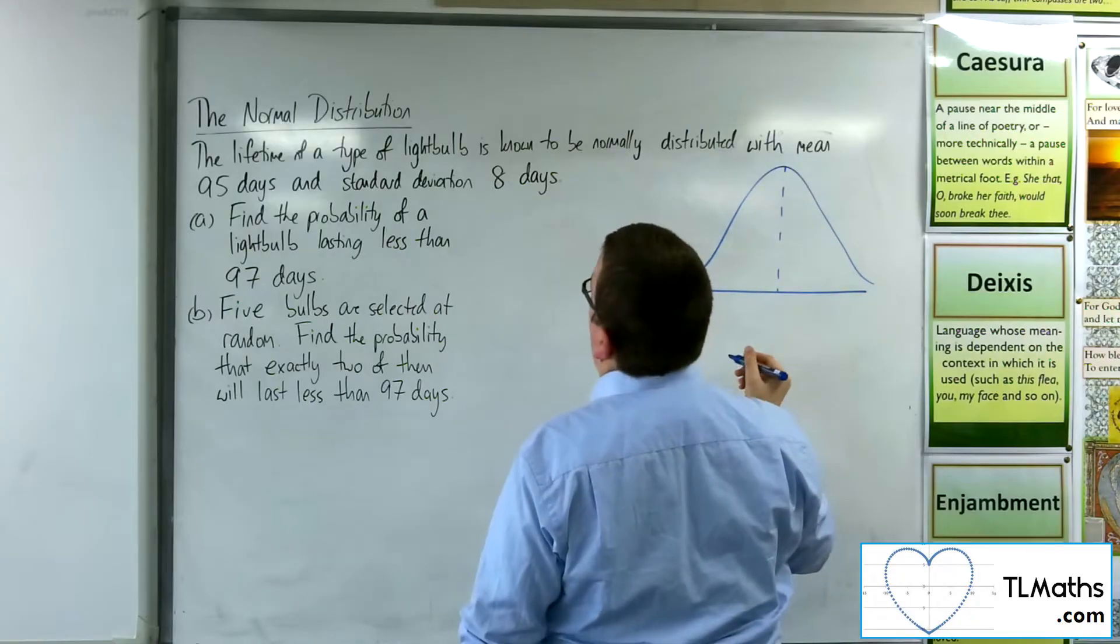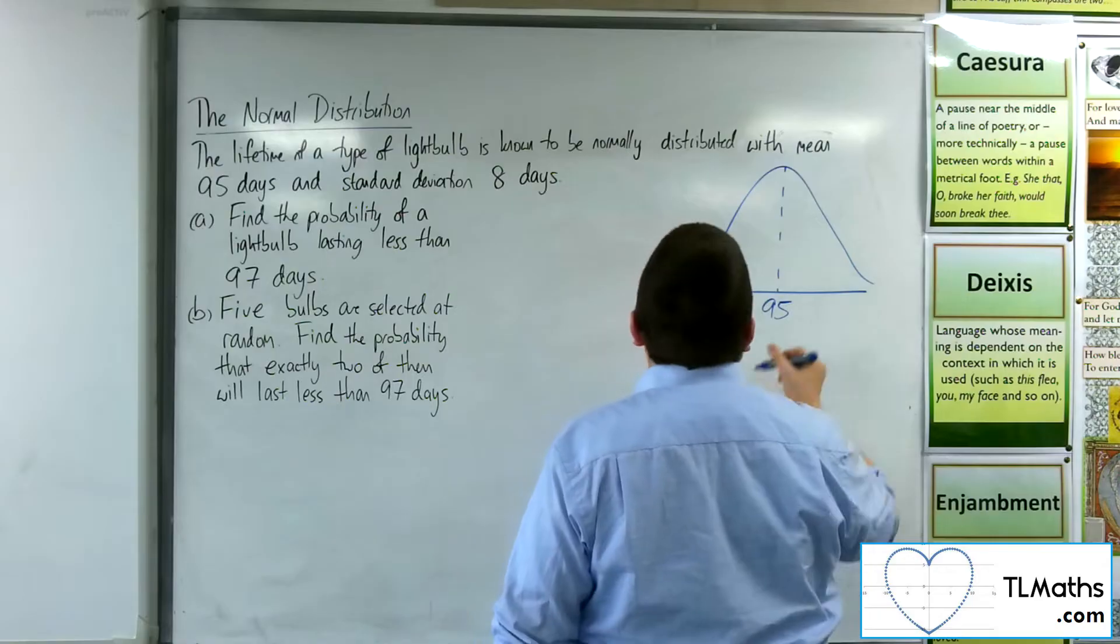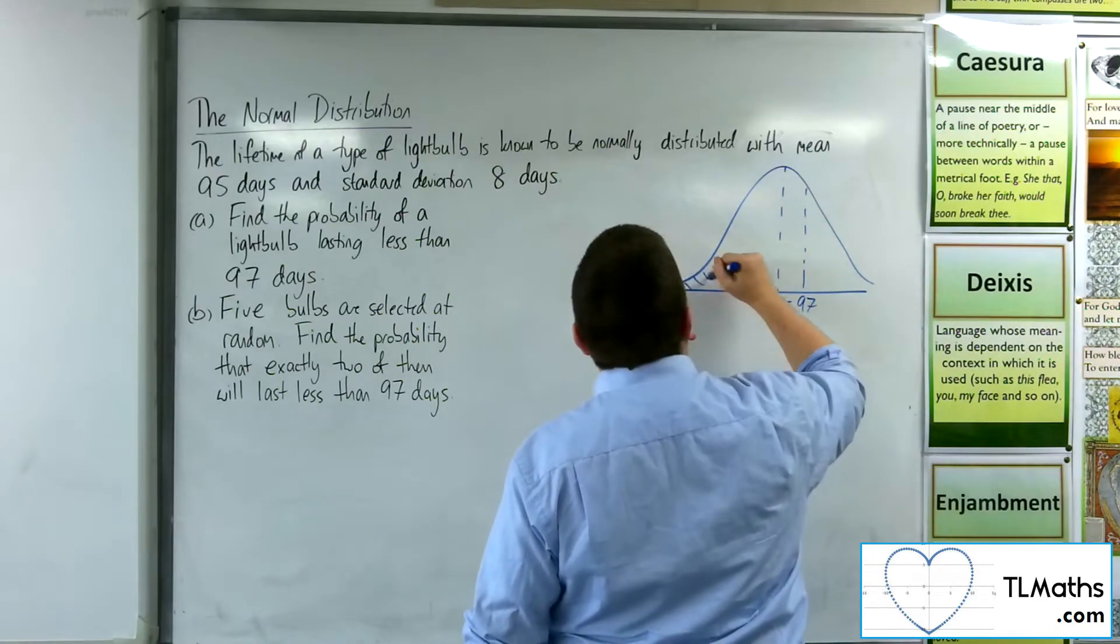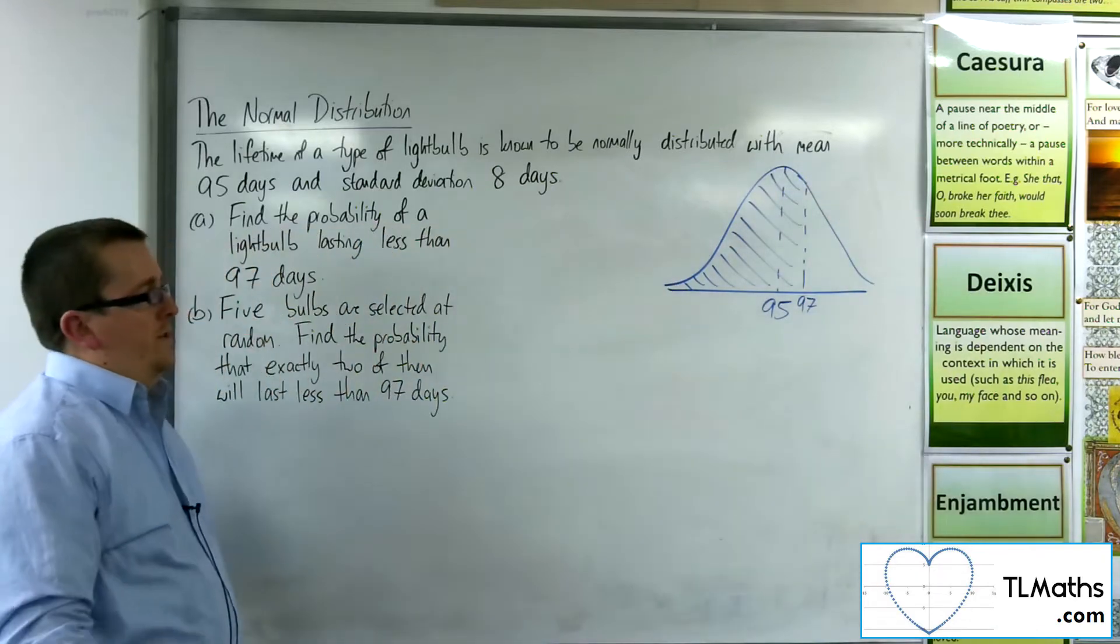So the mean here is 95. We've got 97 days over here. So we want to find the probability that it's less than 97 days, so that area.